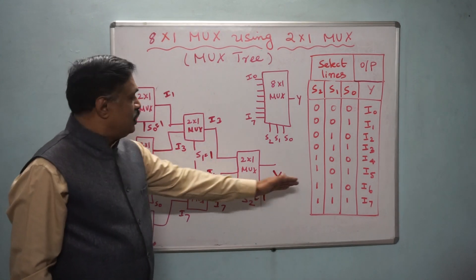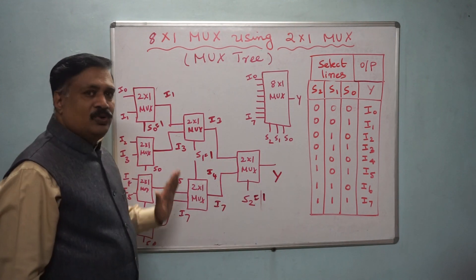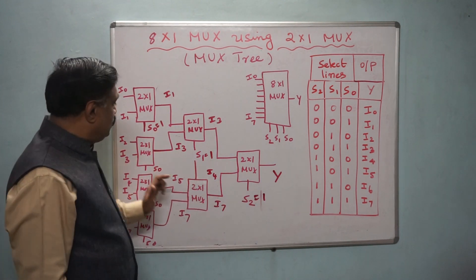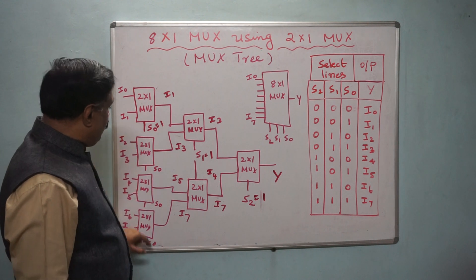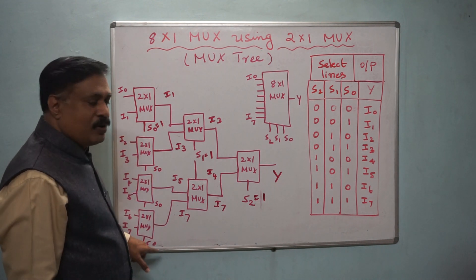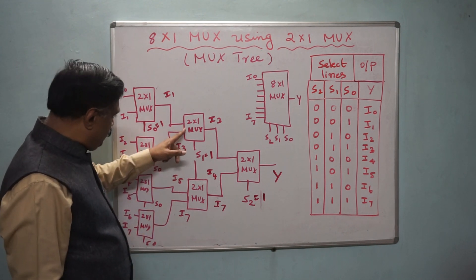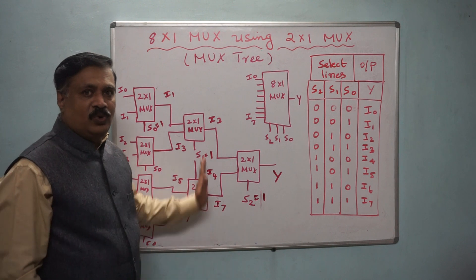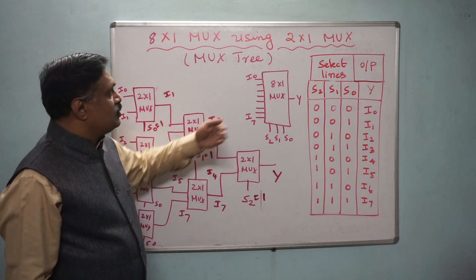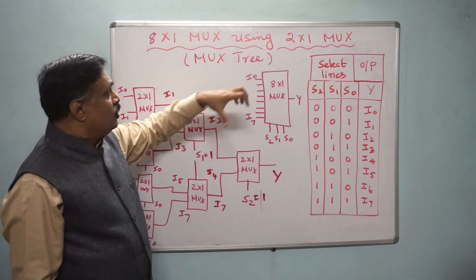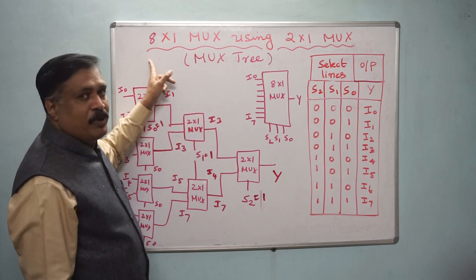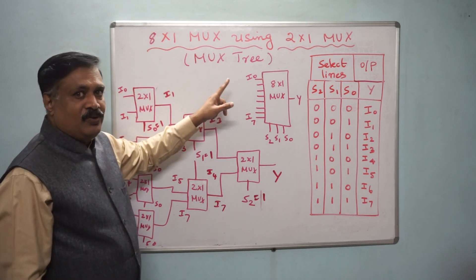Here we used only 2 by 1 MUXes. How many are required? 4 at the first level plus 2 at the second level plus 1 at the final level — 7 total. So 7 two-by-one multiplexers are required to design an 8 by 1 multiplexer.